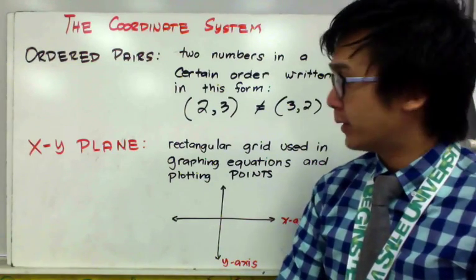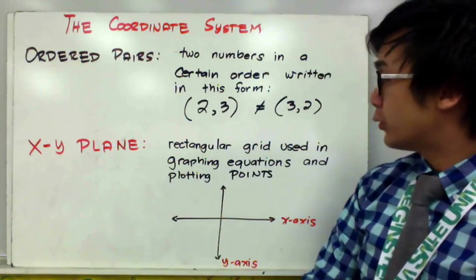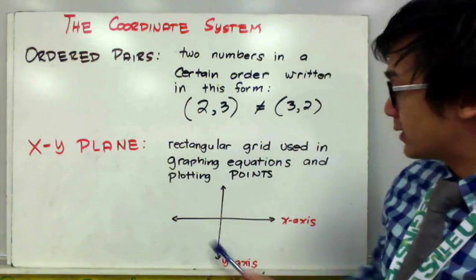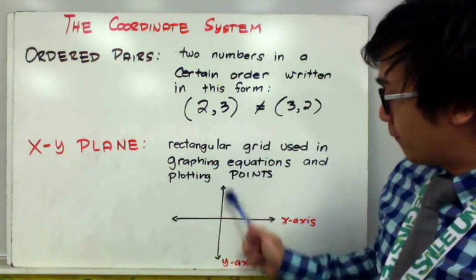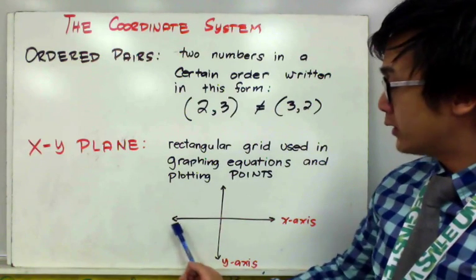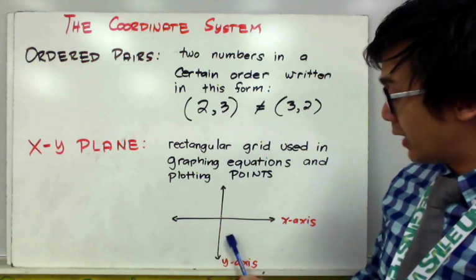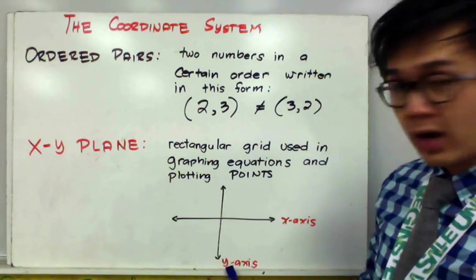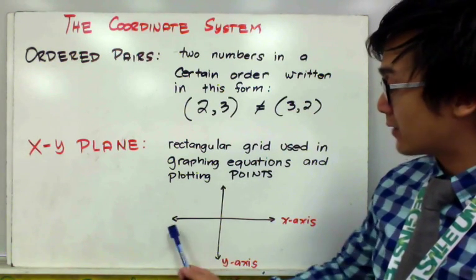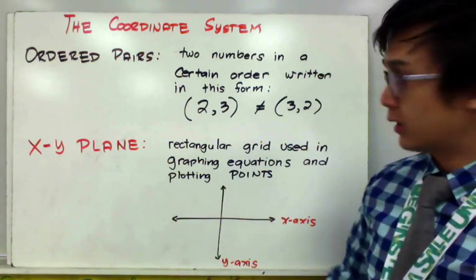What is an x-y plane? An x-y plane is a rectangular grid used in graphing equations or points in a given line similar to this one. So we have our vertical line and our horizontal line. Our horizontal line here is represented by the x-axis and the vertical line is represented by y-axis. These two axes will not change. It's always going to be x-axis on the horizontal line and the y-axis on the vertical line.